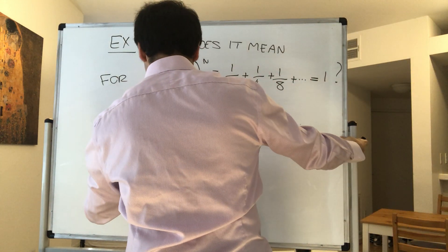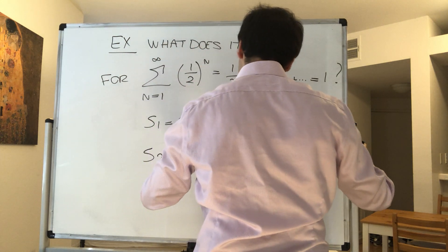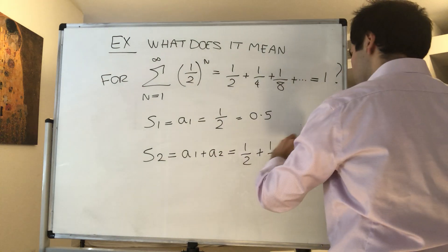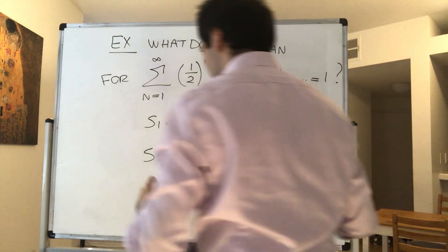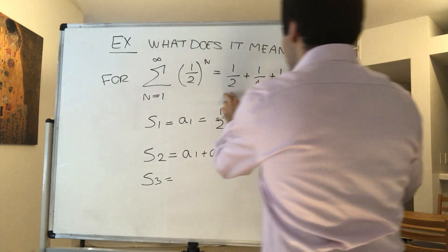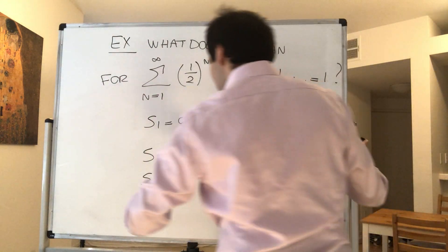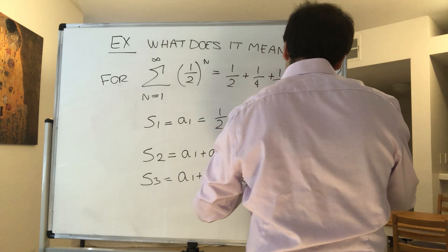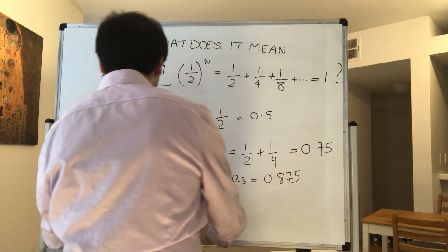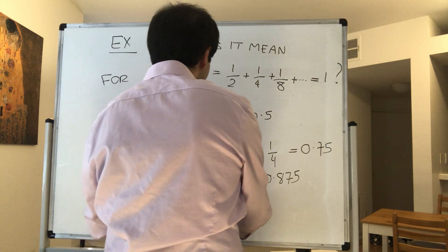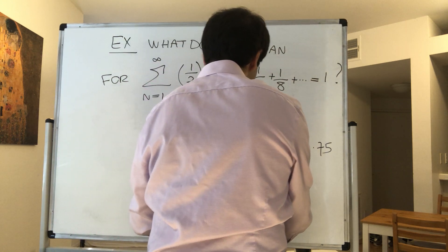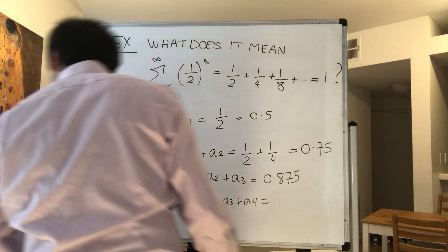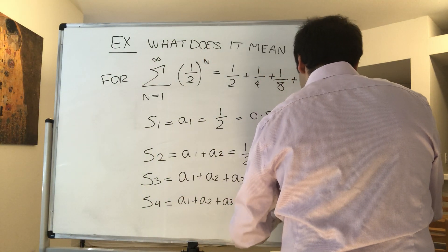So we start with two terms. S_2 is A_1 plus A_2, which is one-half plus one-quarter, so three-quarters — think 0.75. S_3 is the sum of the first three terms, so A_1 plus A_2 plus A_3, which is 0.875. And then S_4 is the sum of the first four terms plus A_4, which is roughly 0.9375.